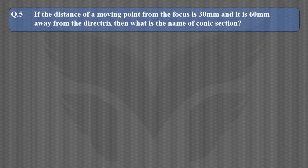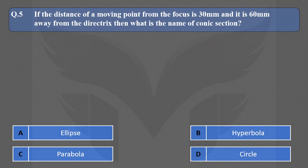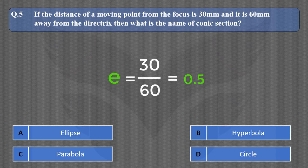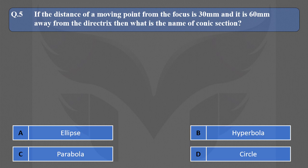Next question: If the distance of a moving point from the focus is 30mm and it is 60mm away from the directrix, then what is the name of the conic section? We can calculate the eccentricity: it is 30 upon 60, which is 0.5 — less than 1. Ellipse is a curve having eccentricity less than 1, so the correct option is A, ellipse.